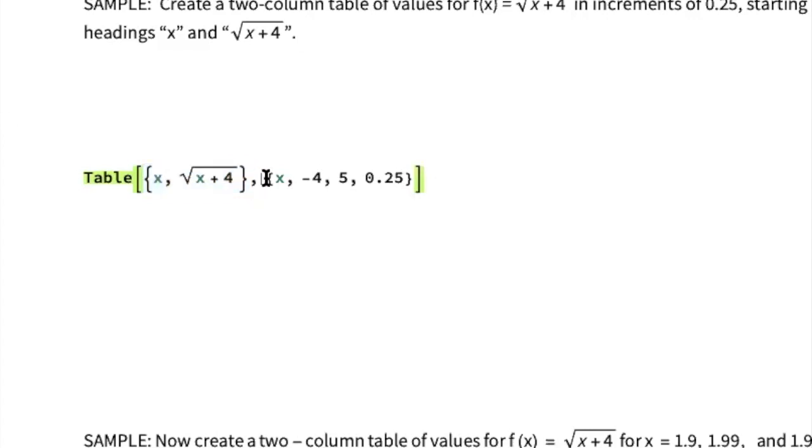Next, I put a comma. And the other information I need to provide is what x values I want to use as inputs. So inside of set of set brackets, I put the variable x from negative 4 to 5. And in the last spot, I always put the increment. The increment is what the x values in the table will increase by. So by setting it to 0.25, my table is going to start at x = -4, then go to x = -3.75, then x = -3.5, and so forth. Now I'm not going to worry about the table headings just yet. Let's just see what the basic Table command does.